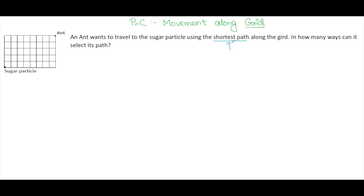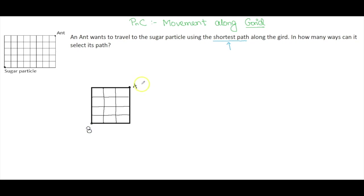Let this point be point A and this be point B. A person named Amit is standing at A and wants to travel to point B. How can he travel? He can travel towards the left direction, the right direction, below, or above — he can go in any direction.